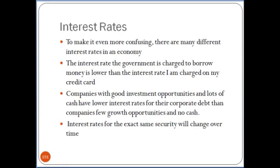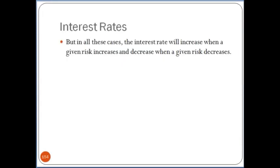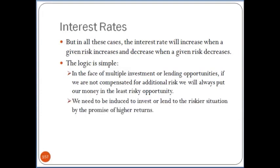What causes interest rates to be what they are? The main thing is: in all these cases, the interest rate is going to increase when a given risk increases and decrease when a given risk decreases. There's a risk-and-return link, which we'll talk about more next week. The logic is pretty straightforward — in the face of multiple investment or lending opportunities, if we're not compensated for additional risk, we'll always put our money in the least risky opportunity. So we need to be induced to invest or lend to a riskier situation by the promise of higher returns.